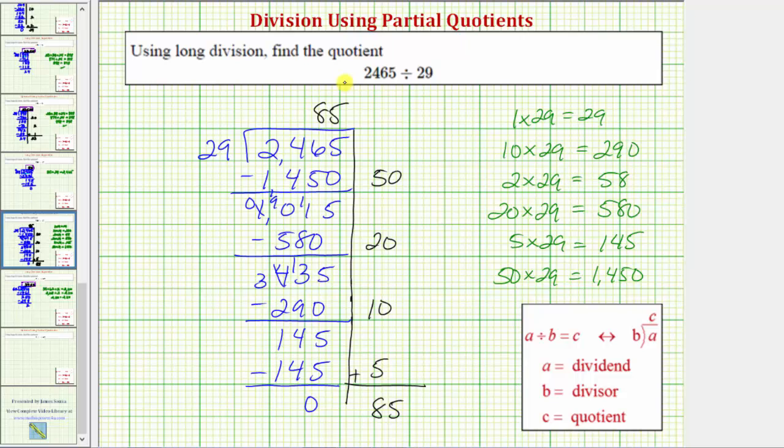This is one way to use the method of partial quotients to find a quotient. The nice thing about the method of partial quotients is that we can use any partial quotients we want in order to find this quotient, and the result would be the same. I hope you found this helpful.